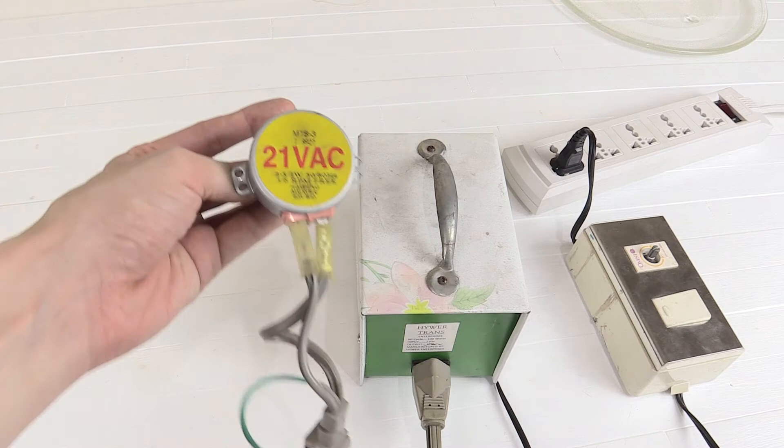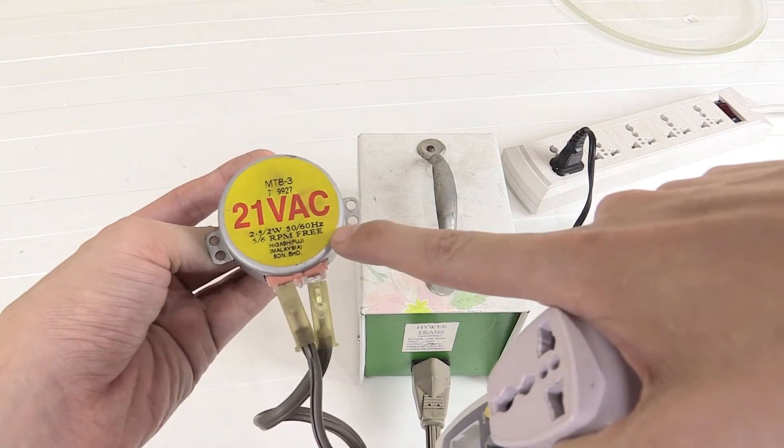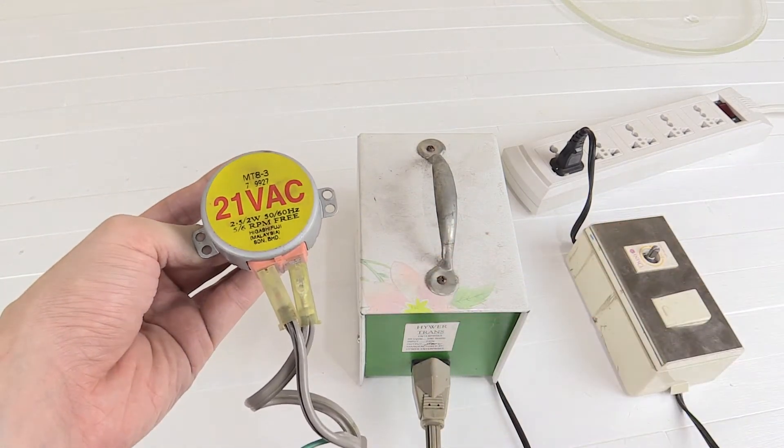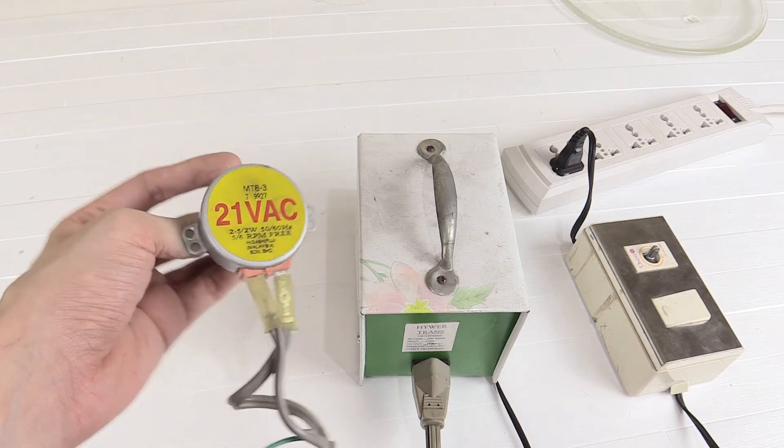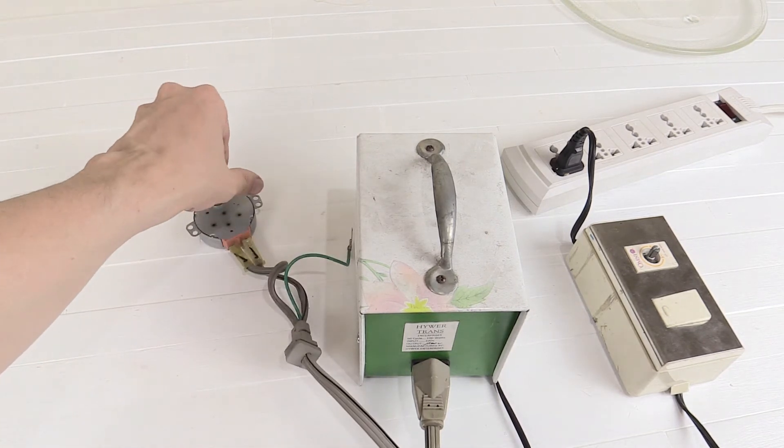Now if you look at the motor you'll see that it's 21 volt AC, around 2 watts and it should give 5 or 6 RPM. So it's pretty slow and that's perfect.